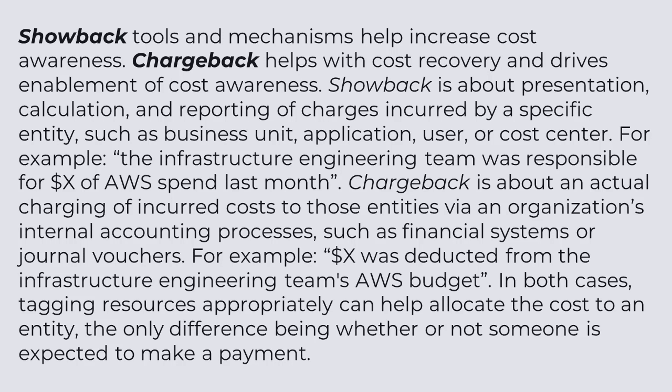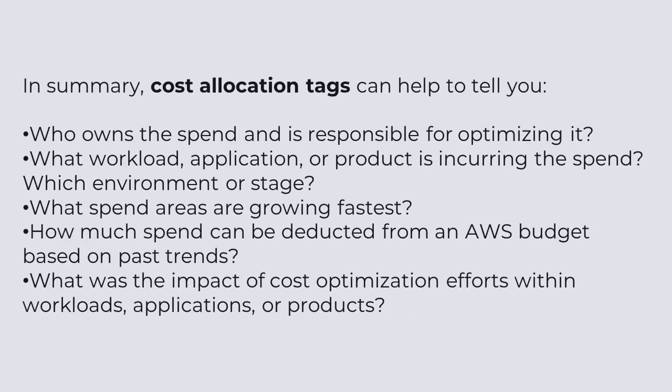The cost allocation can be divided into two types: showback and chargeback. Cost allocation tags can help tell you who owns the spend and is responsible for optimizing it, what workload, application, or product is incurring the spend, which environment or stage, what spend areas are growing fastest, how much spend can be deducted from an AWS budget based on past trends, and what was the impact of cost optimization efforts within particular workloads or products.